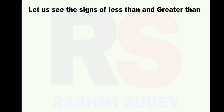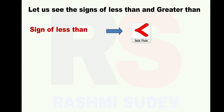Let us see the signs of less than and greater than. This is the sign of less than. You can show this sign using your fingers. Take 2 fingers in your left hand - the index finger and middle finger. You can show the less than sign using these two fingers of your left hand.